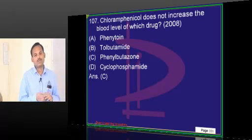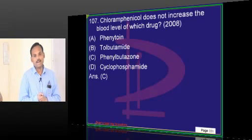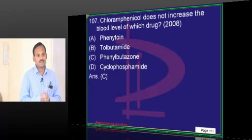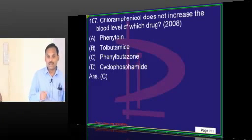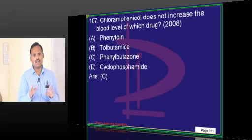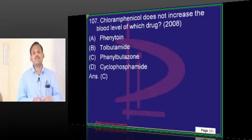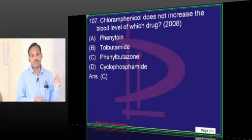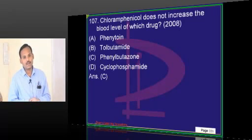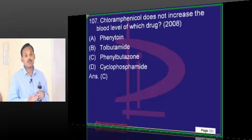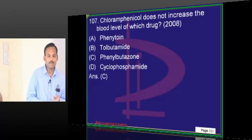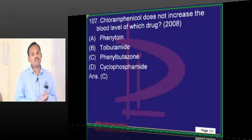What is the current indication for chloramphenicol in a person with HIV? For meningitis — Neisseria meningitis — meningitis in immunocompromised individuals, the best drug is chloramphenicol. Chloramphenicol reaches the CSF in very high concentration and is used in treatment of Neisseria infections.